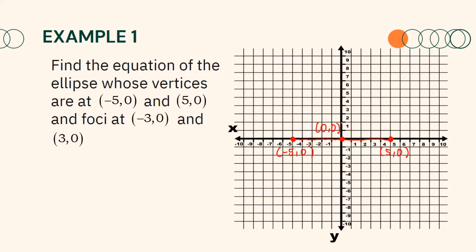Moreover, the distance from the vertices to the center is the value of a. Since from the center to one vertex we have 5 units, thus a is equal to 5, and it follows that a² is equal to 25.